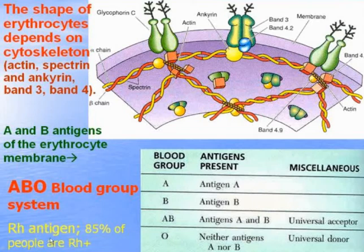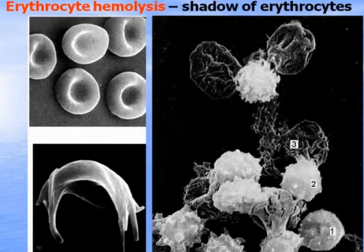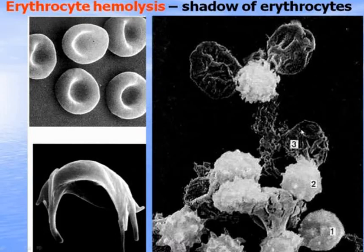Glycocalyx also contains the Rhesus antigen. Erythrocyte hemolysis is the destruction of the plasma membrane and release of hemoglobin into the plasma. You can see here the shadow of erythrocytes — the empty erythrocytes, or the plasma membrane only.